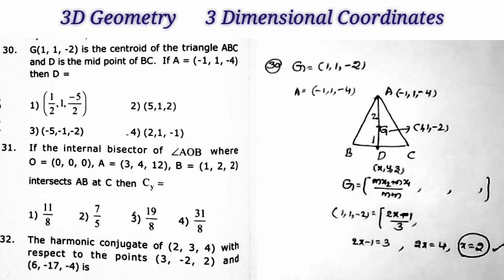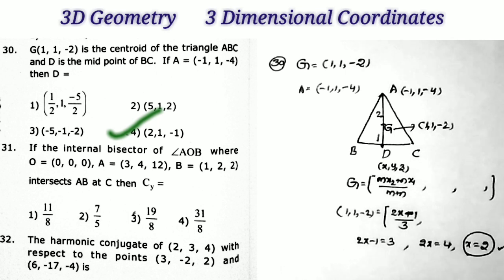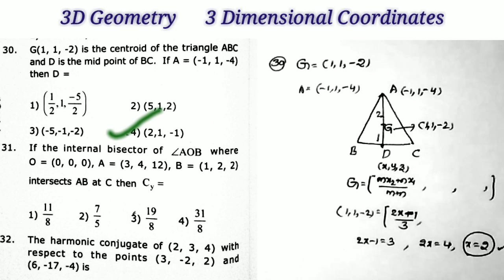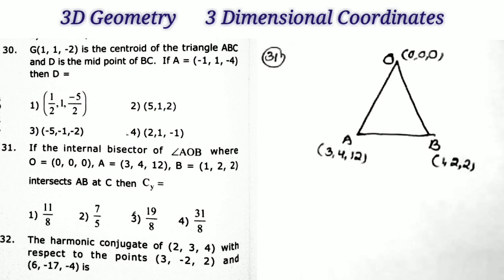Since x = 2, and in the fourth option only we have x = 2, we can directly tell the answer is the fourth option. Without doing the remaining two coordinates, directly we can tell the answer. Therefore the answer is the fourth option.